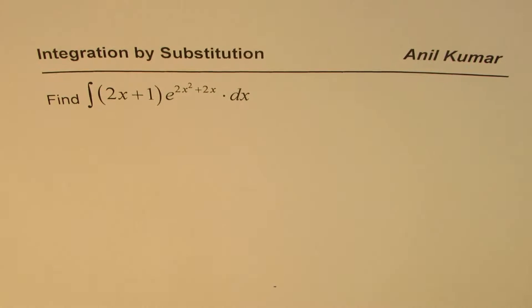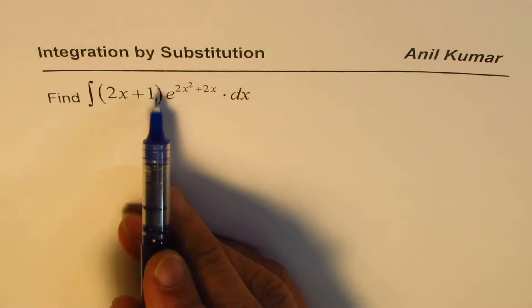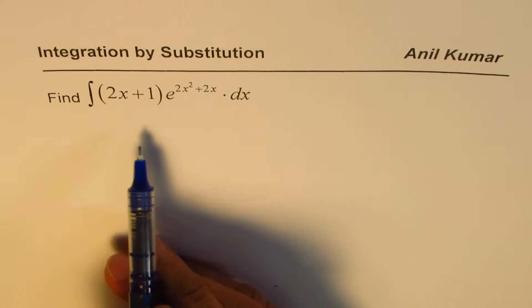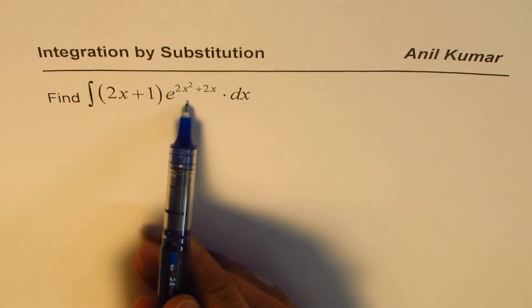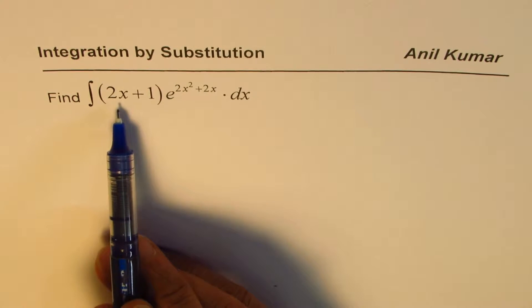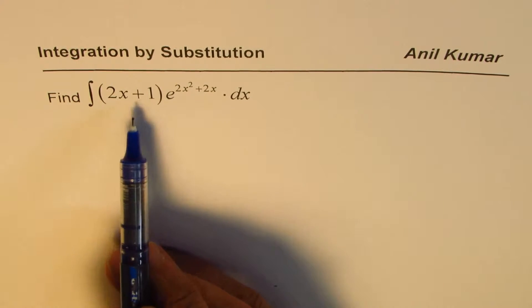I'm Anil Kumar sharing with you the substitution method to find integrals. In the given example we have a product of two functions: 2x plus 1 times e to the power of something. We observe that the derivative of the exponent of e is very much related to 2x plus 1.